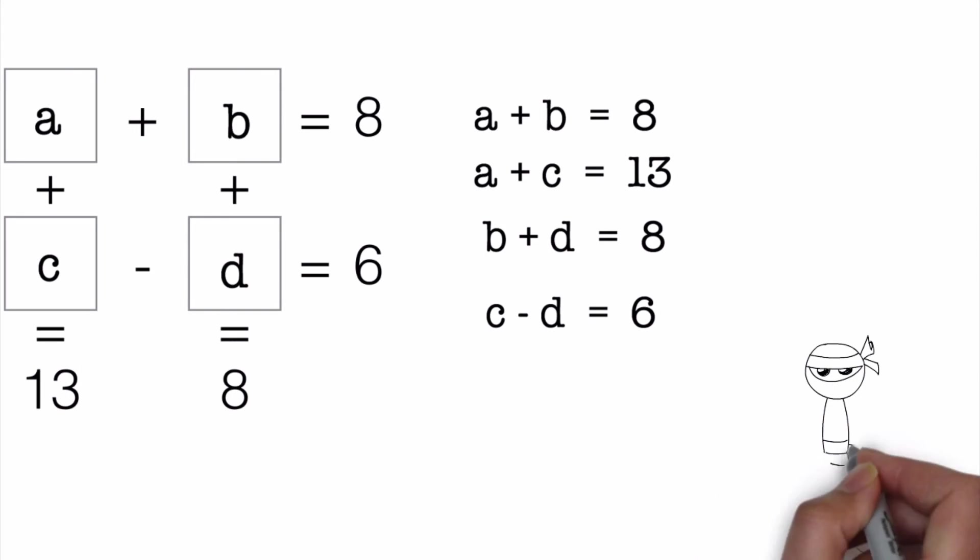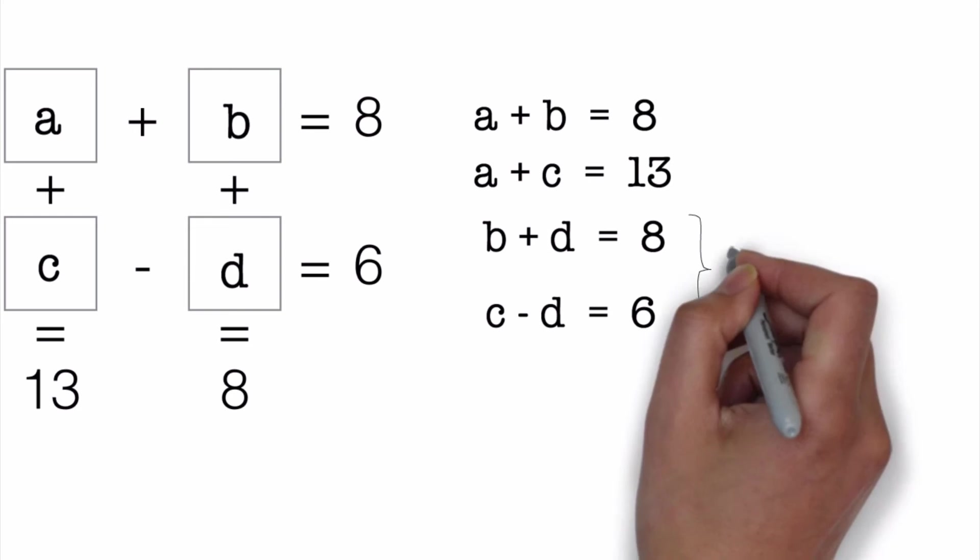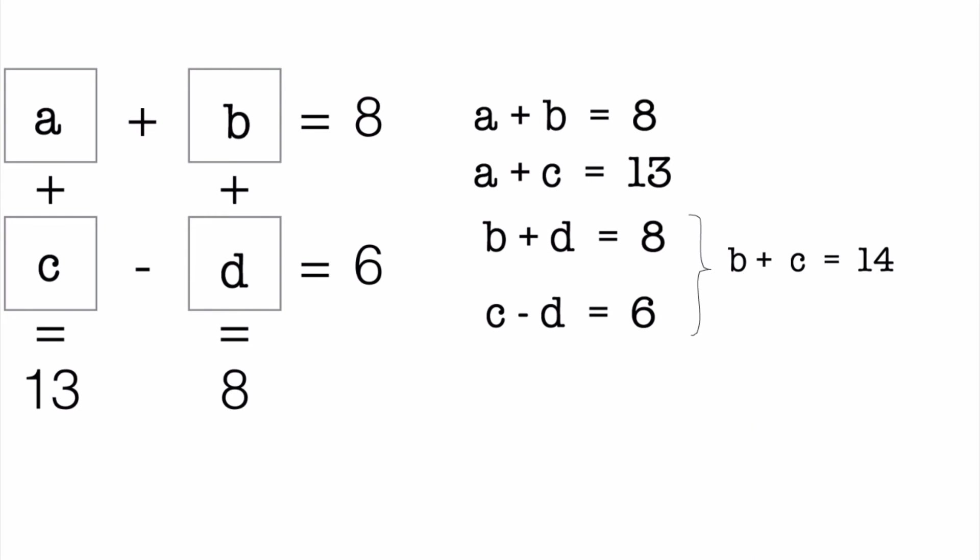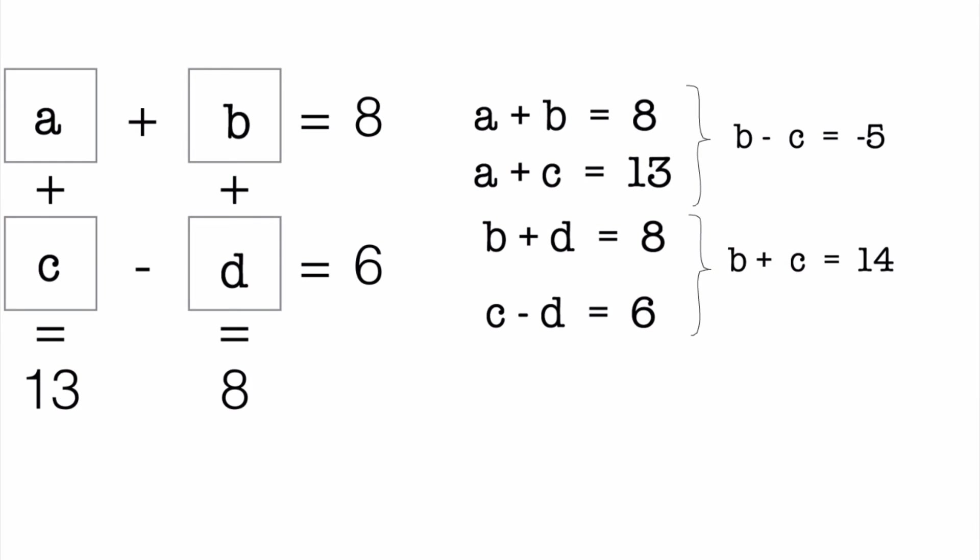Now we have to be quick and smart here to use elimination and start finding our values. So we can look at these two equations, add both sides and say B plus C equals 14. And looking at these two equations and subtracting the second from the first, we can say B minus C equals minus 5.